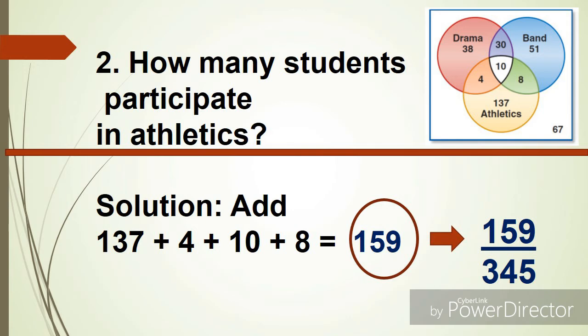Number 2. How many students participate in athletics? The answer is we're going to add 137 plus 4 plus 10 plus 8 equals 159. Or in probability, we have 159 over 345.